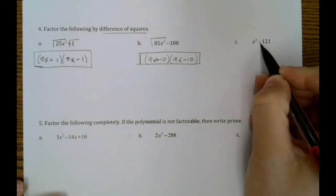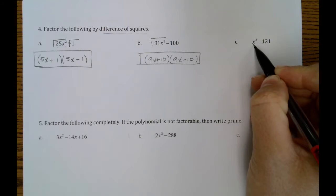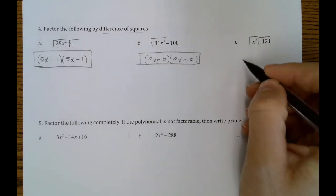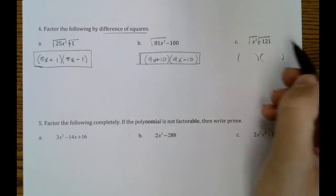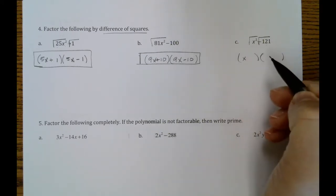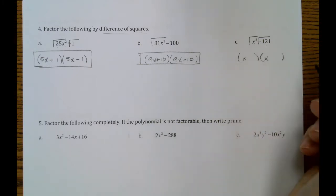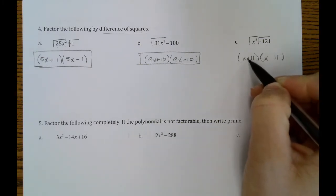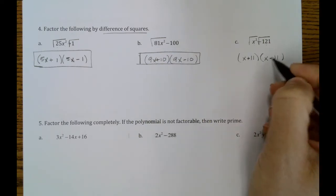Okay, here two terms, subtraction, 1x squared and 121 are both perfect squares. So we can take our square roots. Square root of 1x squared is x. Square root of 121 is 11. One of them will be addition and one will be subtraction.